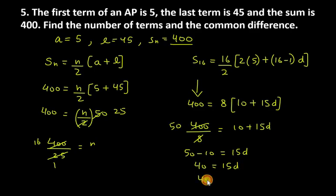Therefore, d equals 40 over 15. Reducing this, we get d equals 8 over 3. The difference is 8 over 3, n is 16. This is the answer for question number 5.